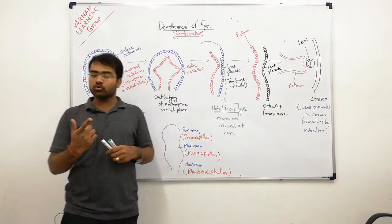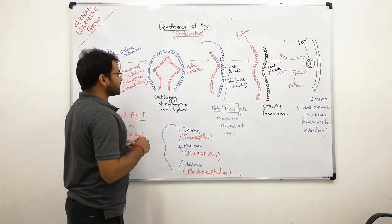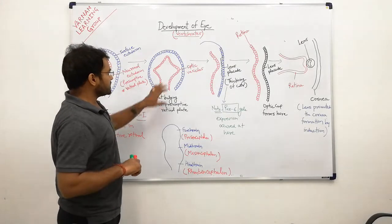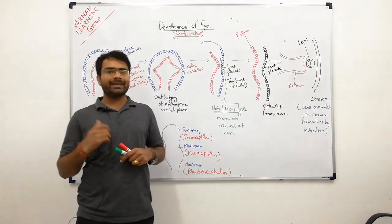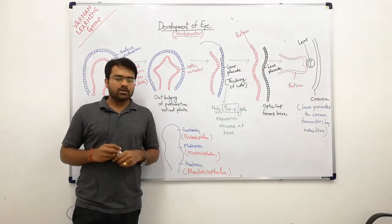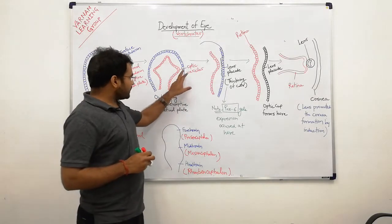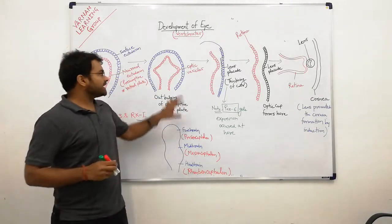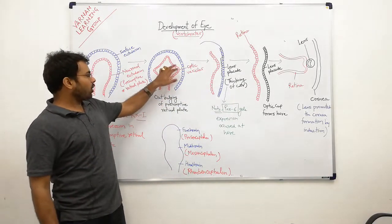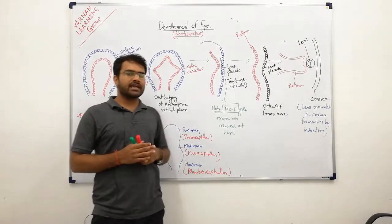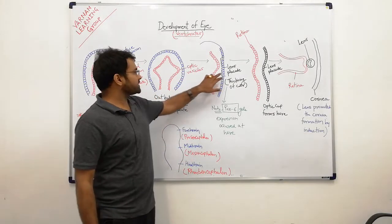The out-bulging of the retinal plate forms the optic vesicle. When the out-bulging occurs, that portion is called the optic vesicle. The optic vesicle then comes into contact with and induces the surface ectoderm.